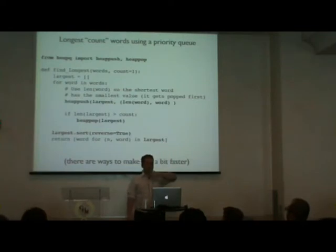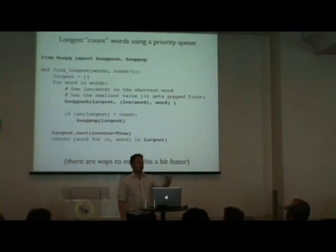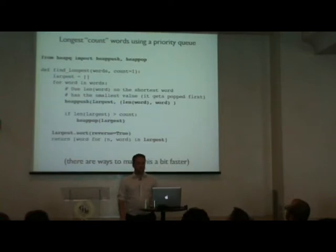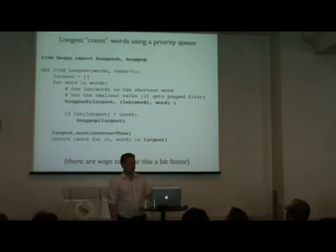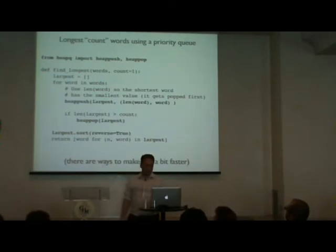To find the five largest words using heapq: import heappush and heappop, go through all words, push each (length, word) tuple onto the heap, and if the heap exceeds size 5, pop the smallest off. Since popping removes the smallest, the heap always retains the five largest seen so far. Once done, sort and extract the results. This avoids sorting the entire list.